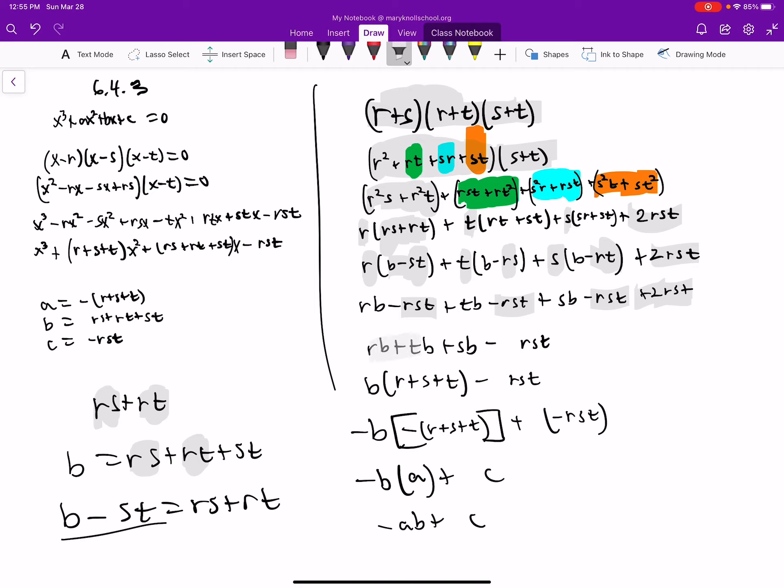Then we end up with this right here. We know that if we factor out a b, we can get a negative a.